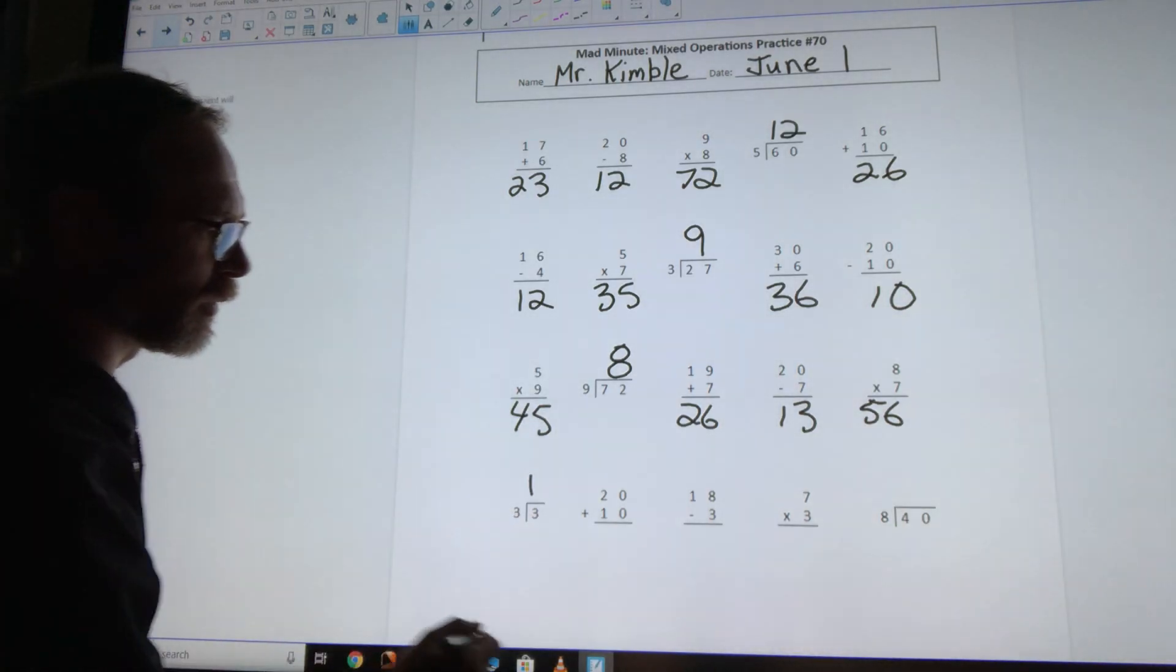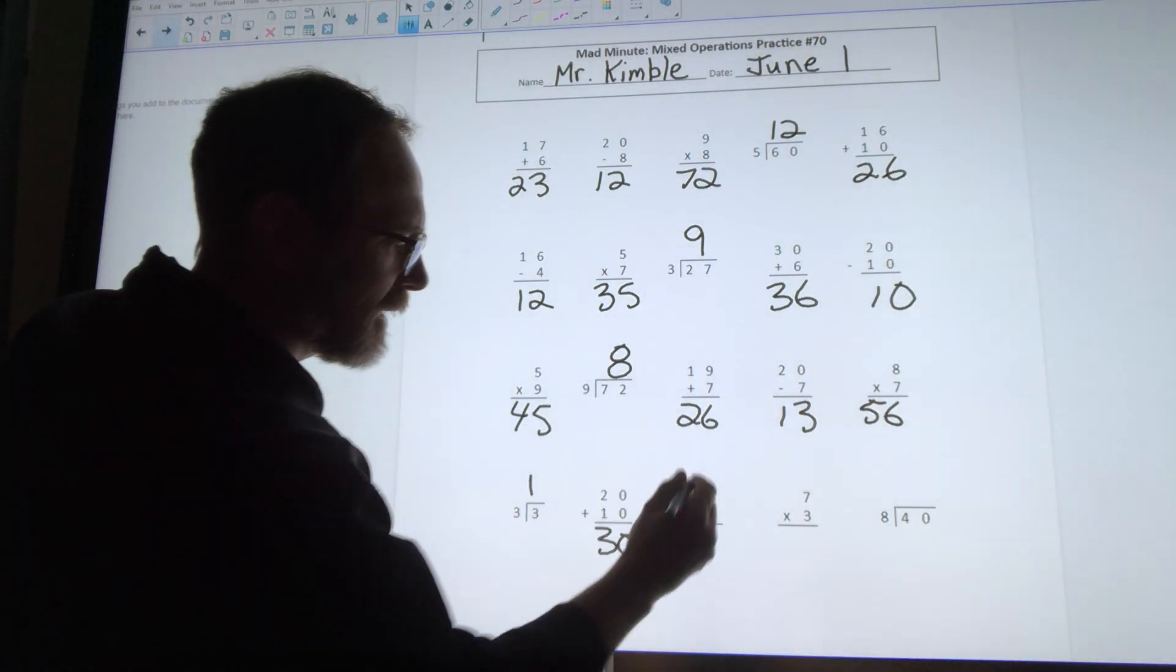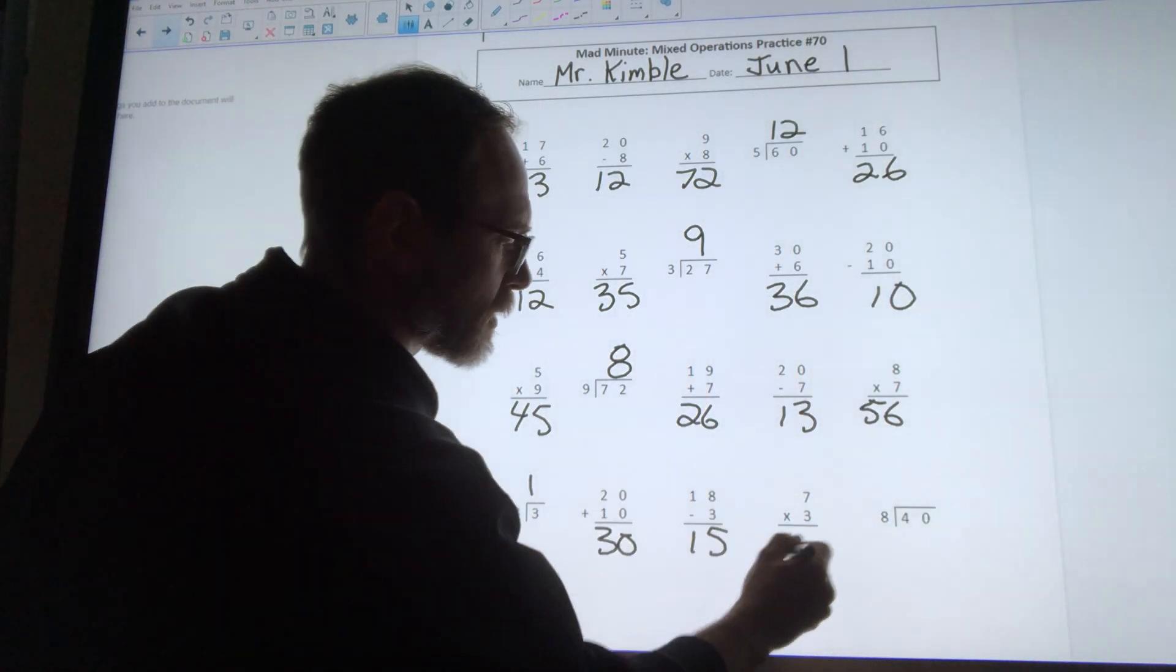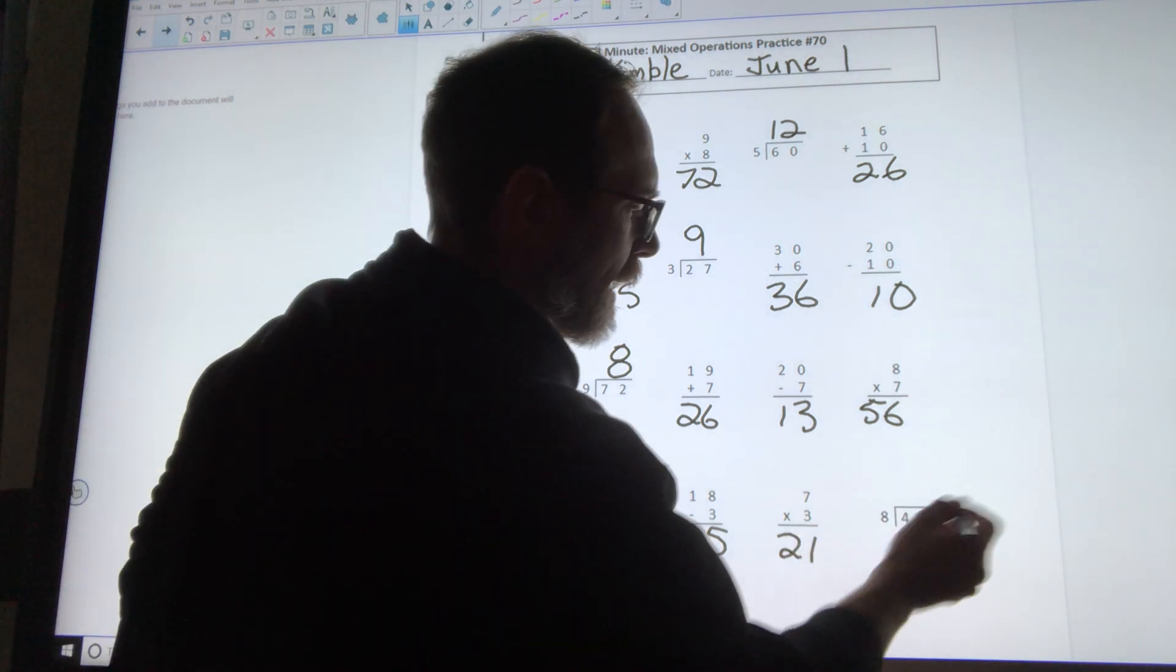Funny looking 5. 3 divided by 3 is 1, 20 plus 10 is 30, 18 minus 3 is 15, 7 times 3 is 21, and 40 divided by 8 is 5.